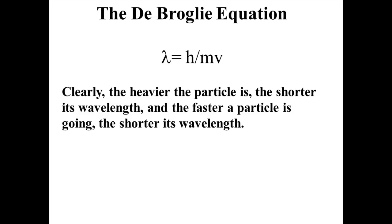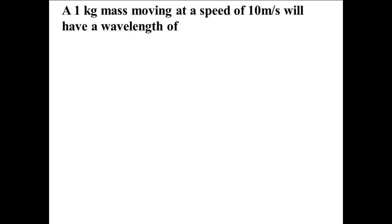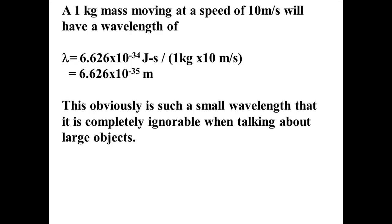Let's do an example to see how large the wavelength is of an ordinary object. Suppose we have a 1 kilogram mass moving at a speed of 10 meters per second. The wavelength will be lambda equals 6.626 times 10 to the minus 34th joule seconds divided by 1 kilogram times 10 meters per second which equals 6.626 times 10 to the minus 35th meters. This wavelength is so small that it is clearly ignorable when we talk about large objects.